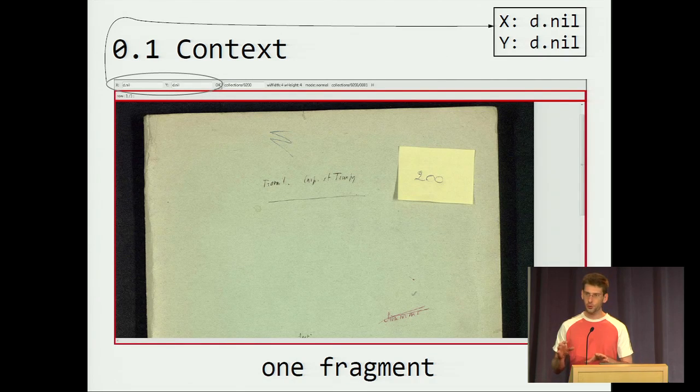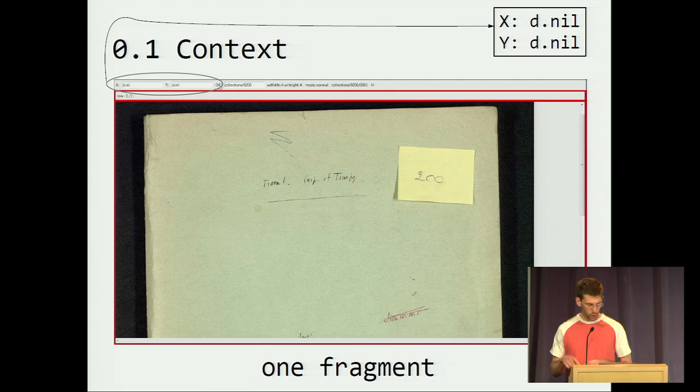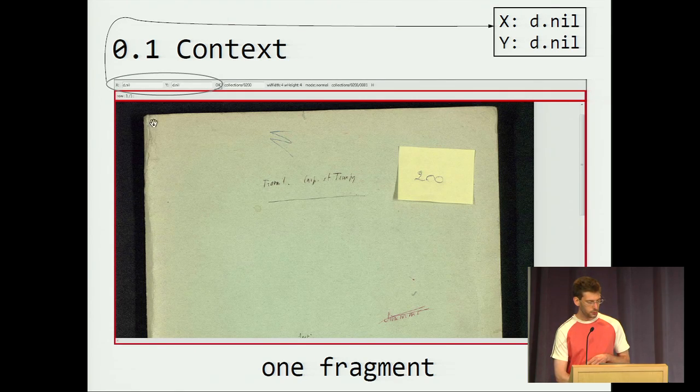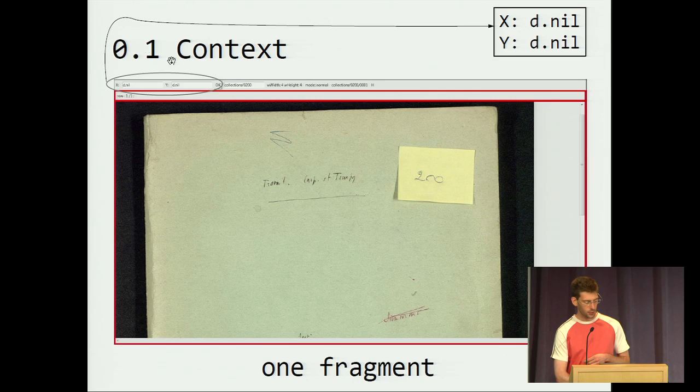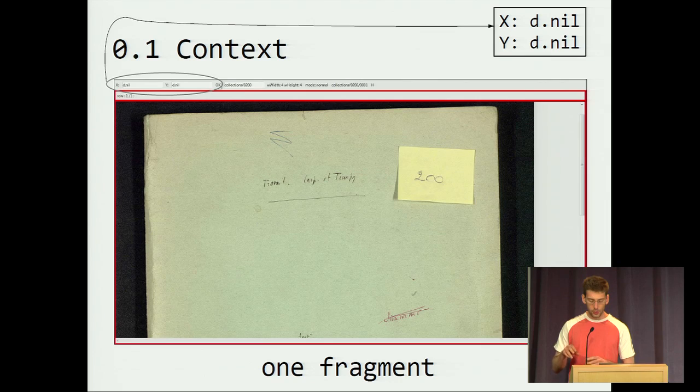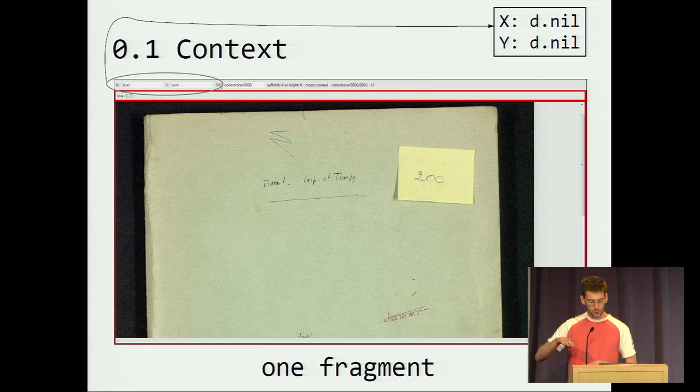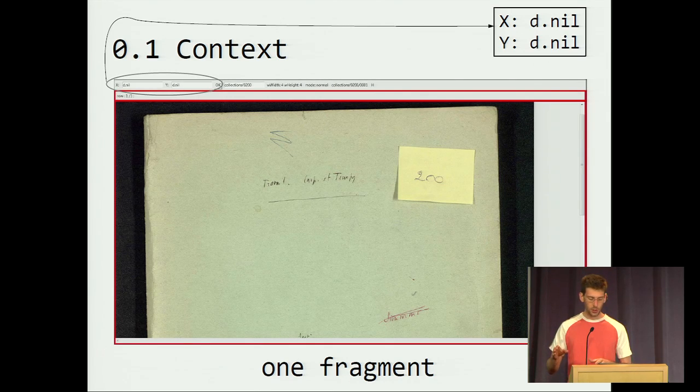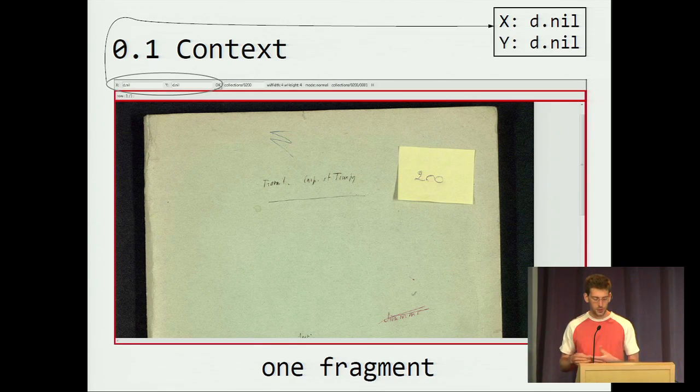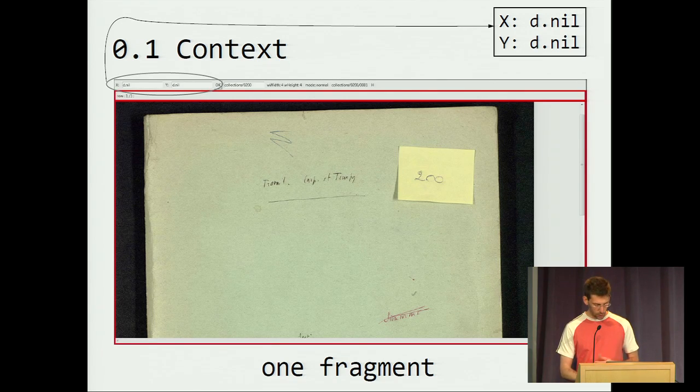We begin with one fragment, and on the right, on the upright of the slide, I do a zoom of what we see here. We have along the... we map to the X dimension of the Euclidean space of the screen something, and to the Y dimension of the Euclidean space of the screen something else. Here we map nothing to the X dimension and to the Y dimension, and we see one fragment.